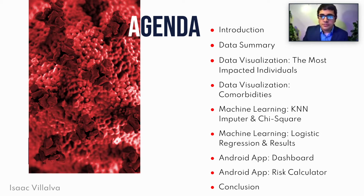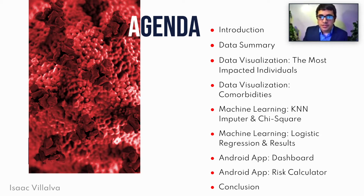For today's agenda, we're going to be discussing the data summary, then the data visualization, the most impacted individuals, as well as the comorbidities. Then we're going to be talking about machine learning — the methods that we use, such as KNN, Imputer, and Chi-Squared, as well as logistic regression and results. Then we're going to be discussing the Android app that we created as a team, as well as the risk calculator, and finally finishing the presentation with a conclusion.